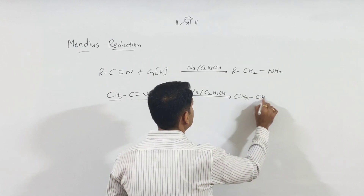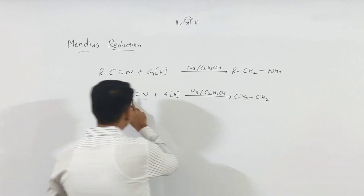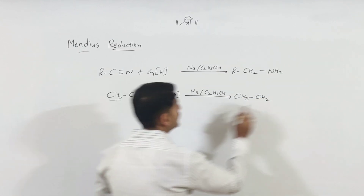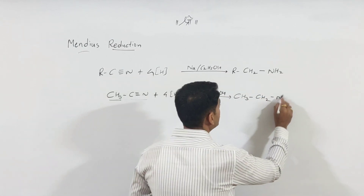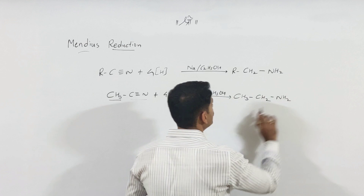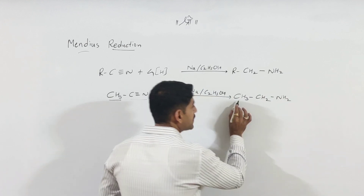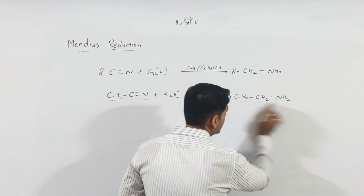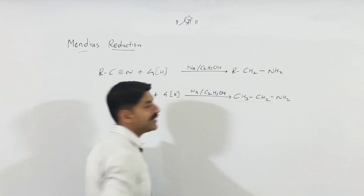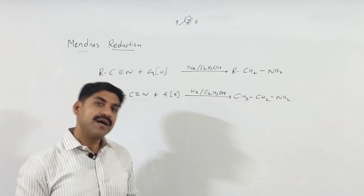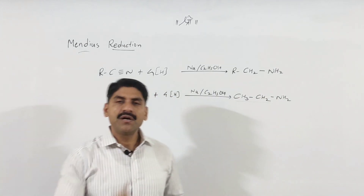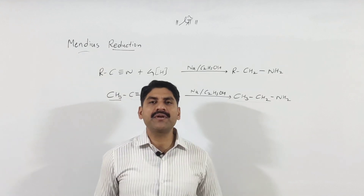The product is CH3–CH2–NH2: the CH3 group, then CH2, and nitrogen with 2 hydrogens. This gives us ethanamine, also known as ethylamine. It is a simple reaction.